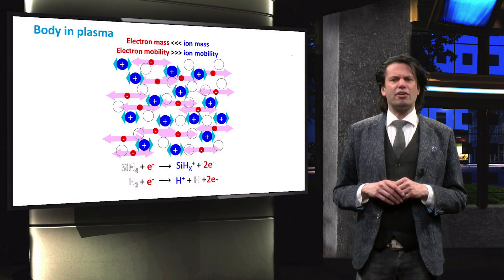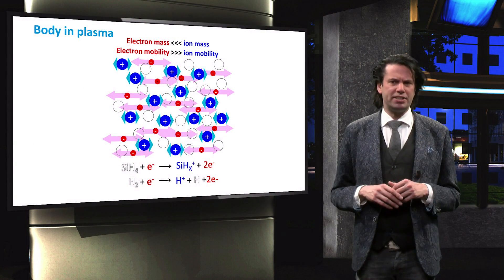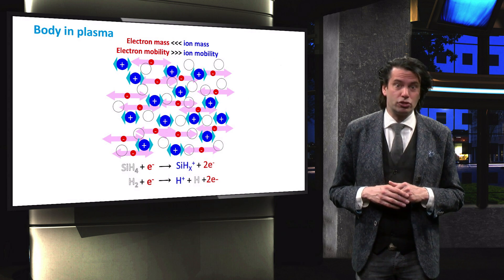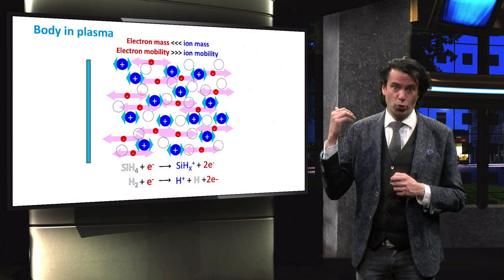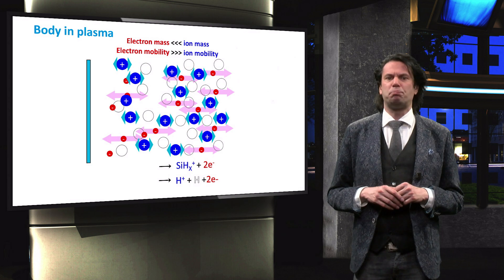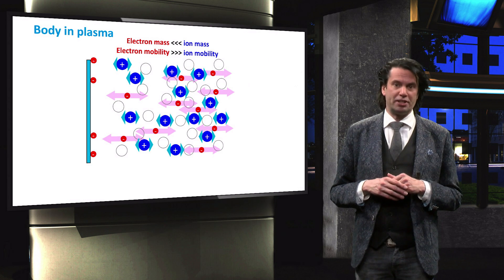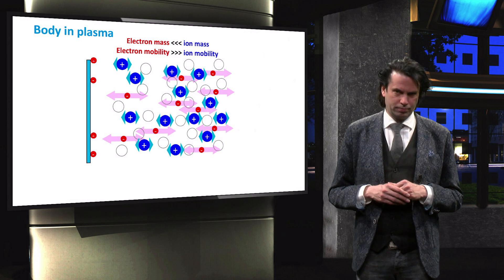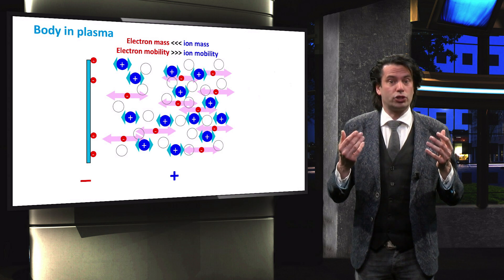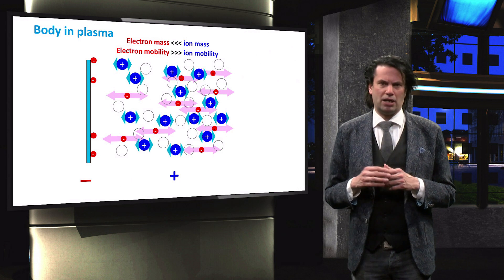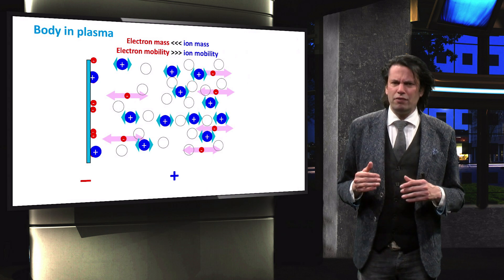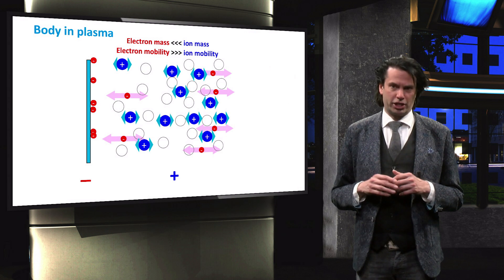Secondly, the electrons have a much higher mobility than the ions. Therefore, any electrically isolated object, such as this light blue object placed in the plasma, will immediately experience the impact of large flux of randomly moving electrons. The object will obtain a negative charge with respect to the plasma. The negative charge will repel some of the electrons and will attract the positively charged ions.